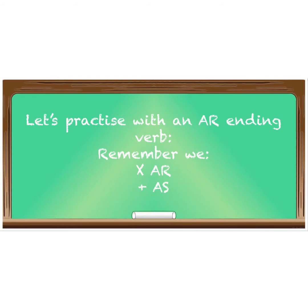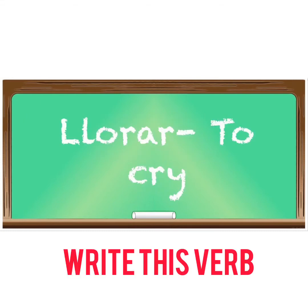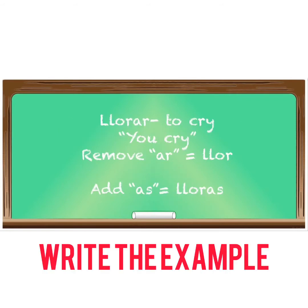Let's practice with an -ar ending verb. All you're going to do is take off the -ar then add -as. The -ar ending verb 'llorar' means 'to cry.' So we remove the -ar and we end up with 'llor,' then we add -as, and we get 'lloras.' So the answer is 'tú lloras.' It's very simple — all we did was take off the -ar and add -as.